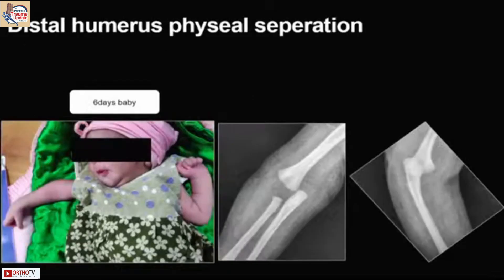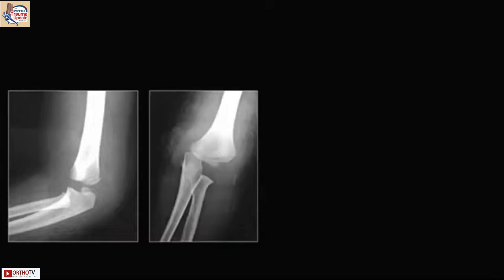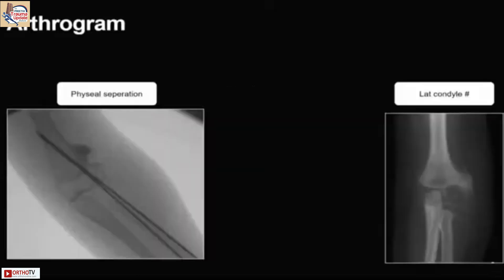Here is a case of distal humerus physeal separation. We see that the medial and lateral humeral lines have moved, and we need better views to evaluate it. The same child, six days old, presented with an MRI already done. We can see cubitus varus at the end of two weeks — that's the physeal separation. We don't routinely do MRI; the child already had one when they came to us. This can be confused with a lateral condyle fracture if only one view is given. It's actually a posteromedial physeal separation. When in doubt, an arthrogram helps to differentiate between the two.